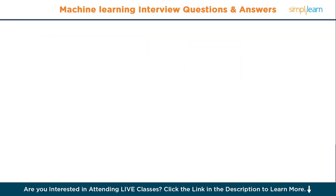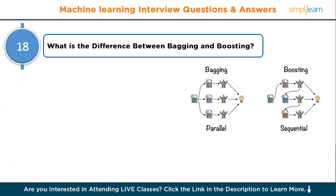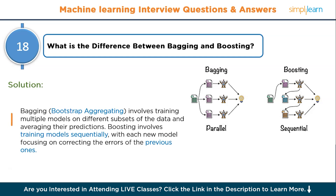Moving to question number eighteen: what is the difference between bagging and boosting? Bagging, that is bootstrap aggregating, involves training multiple models on different subsets of the data and averaging their predictions. Boosting involves training models sequentially, with each new model focusing on correcting the errors of the previous ones.